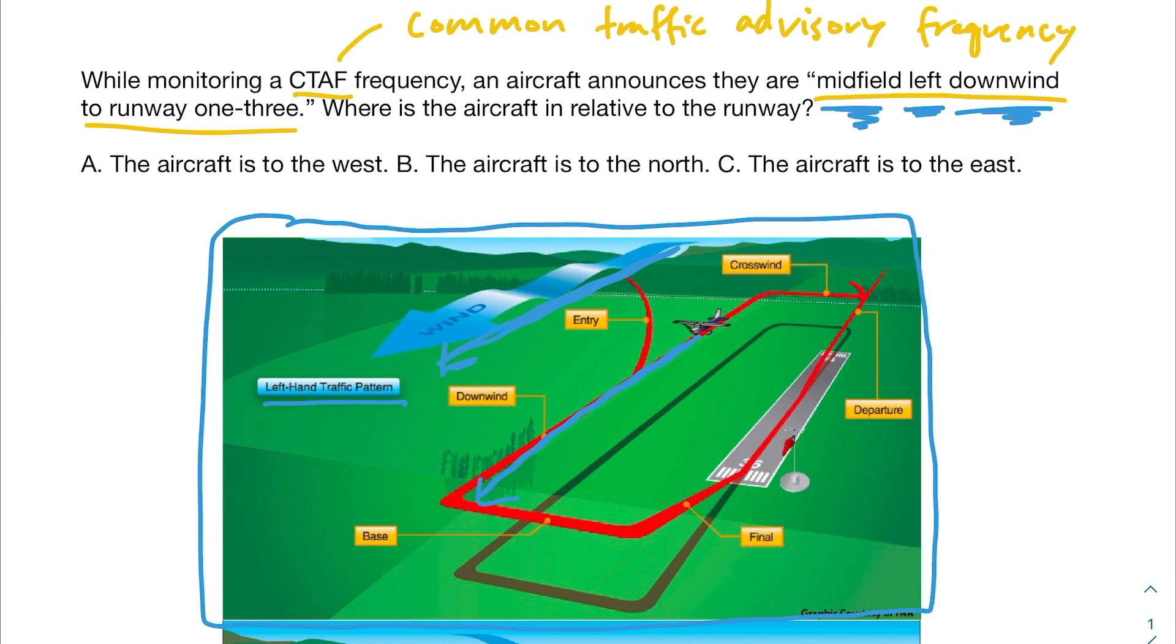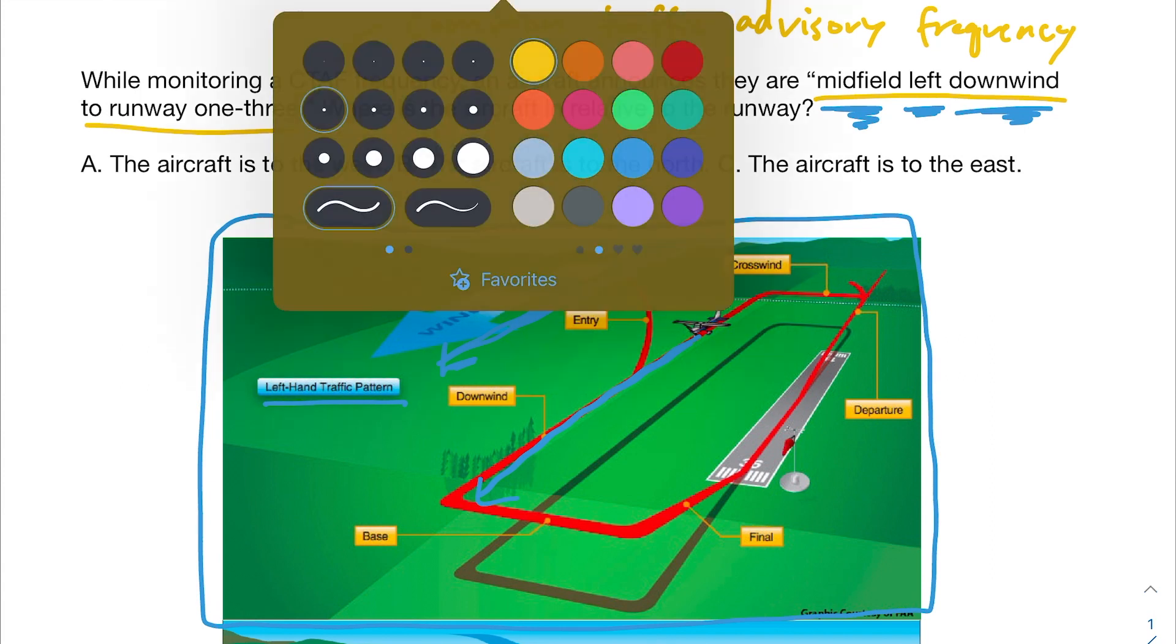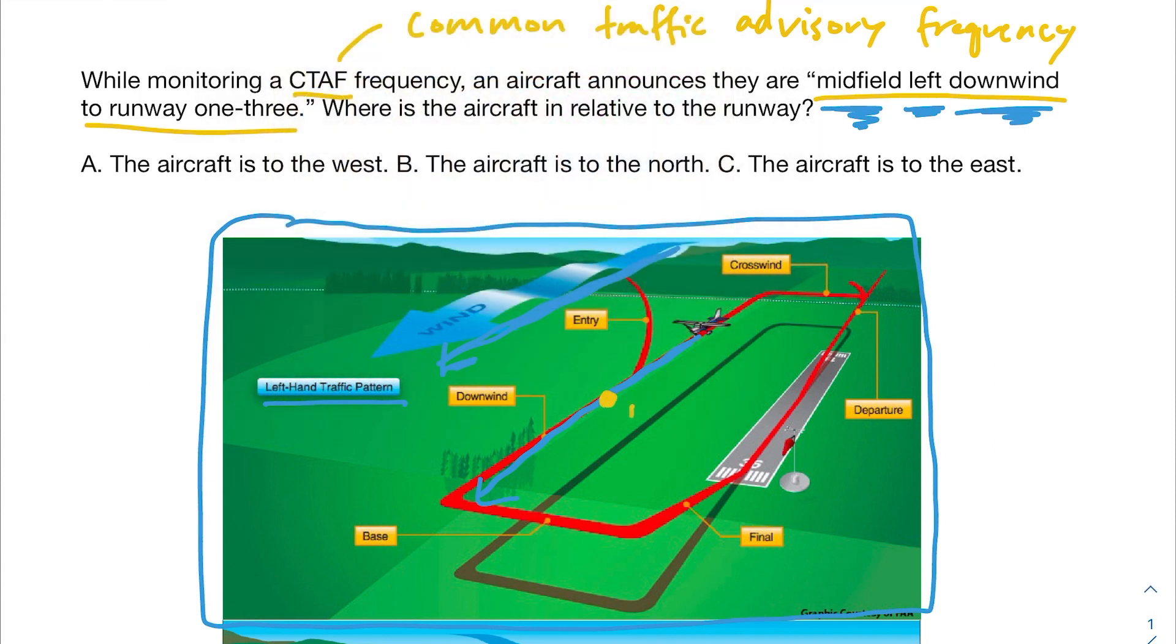If we go back to midfield, what that means is it means that you're at the halfway point of the runway. So here, that would probably be here somewhere, midfield. So on either end of you, you have an equal amount of the runway. All right. So we've got the first three words down in this phrase.